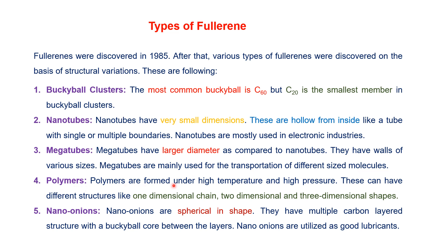Polymers are formed under high pressure and temperature. They have different structures like one-dimensional chain, two-dimensional chain, three-dimensional shapes, etc. Nano onion philorenes have a spherical shape. They have a multiple carbon layer structure like a buckyball core between the layers. Nano onions are utilized as good lubricants.